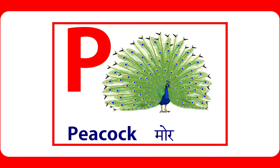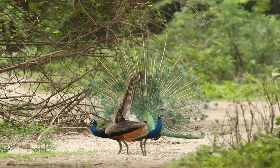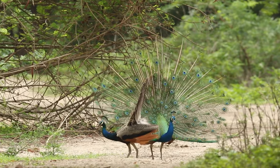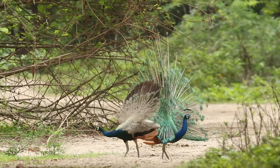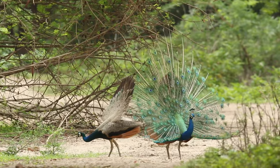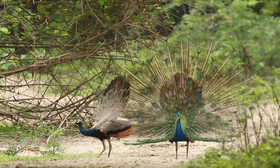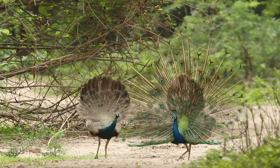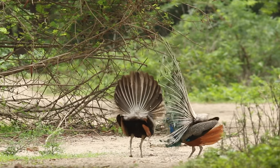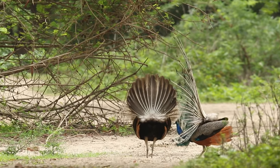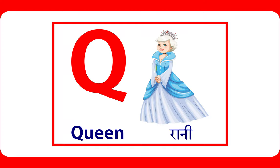P is for peacock. Peacock is a bird. Q is for queen. Queen lives in a kingdom.